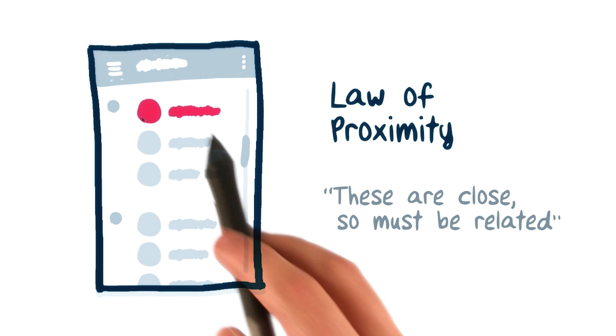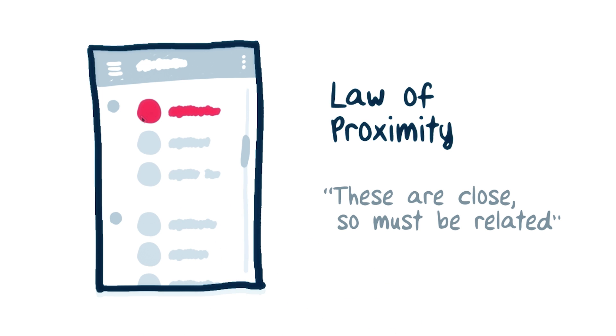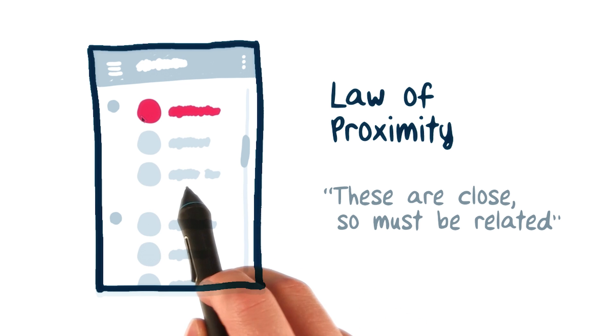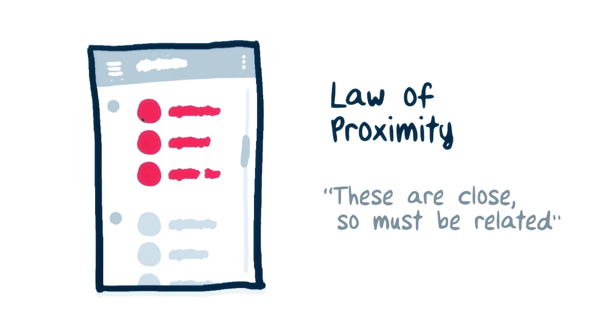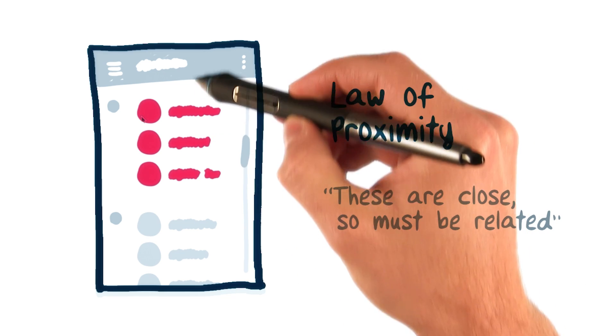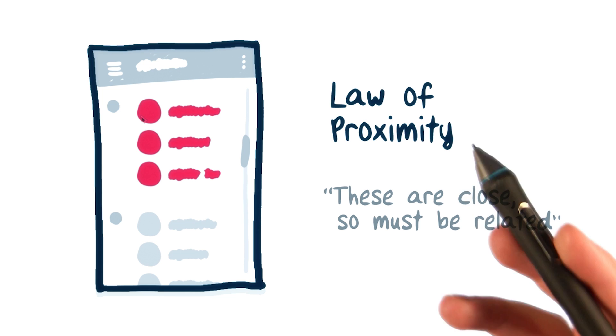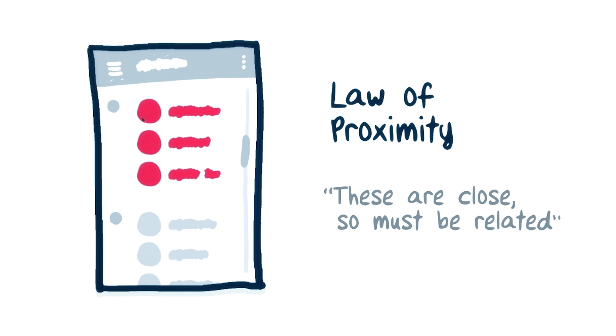Even without knowing what each item says, we won't mistake the relation between this and this with something like this and this. We can also recognize that these three items are close to each other, while the others aren't. This helps us further visually deconstruct what's going on in this screen.